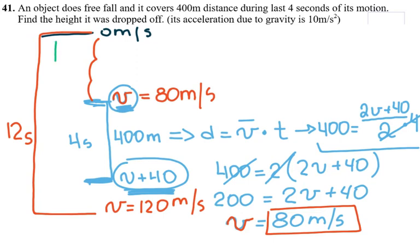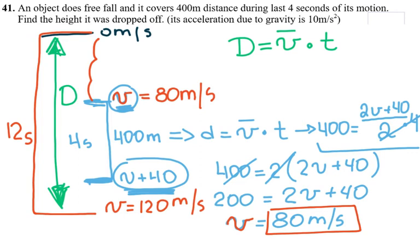And if I want to calculate this distance traveled, so I'm going to call this distance big D. So this distance is equal to average velocity times the time, but average velocity for this interval, for the green part of the interval. So this is, initial is 0, final is 120, average is 60 times 12 gives me 720 meters.